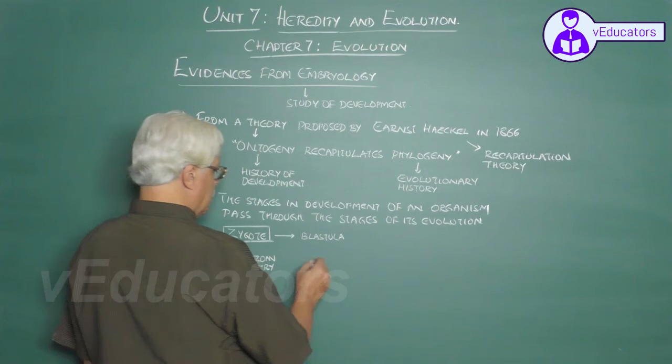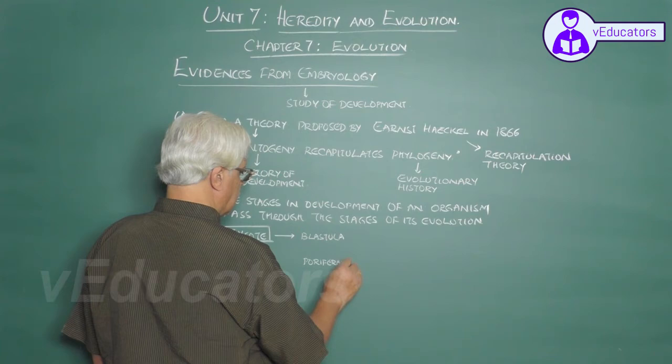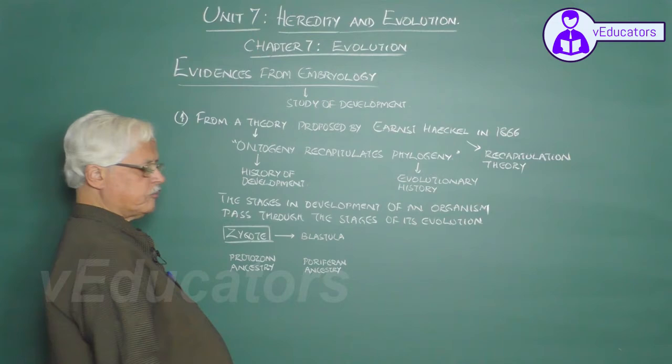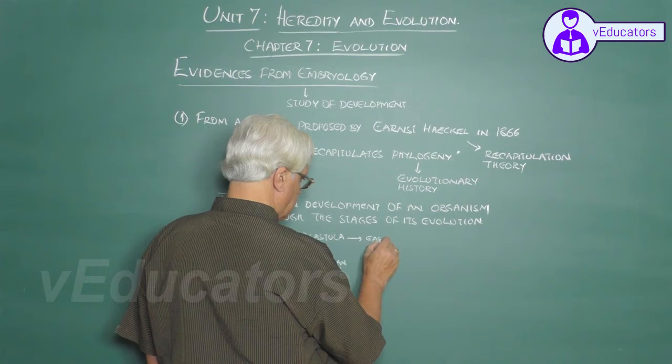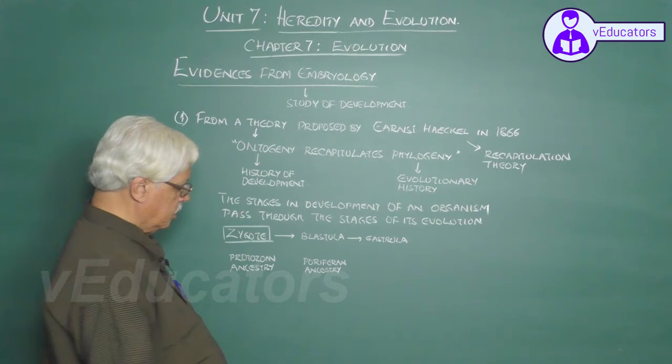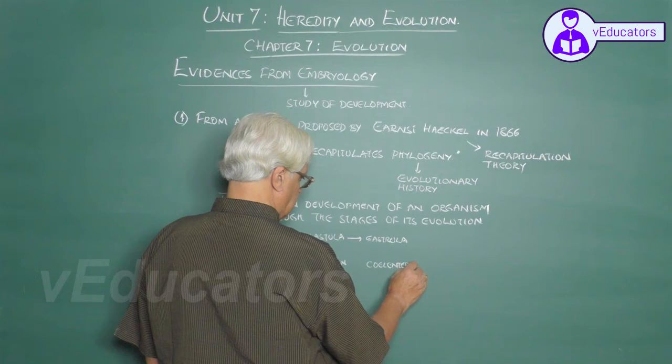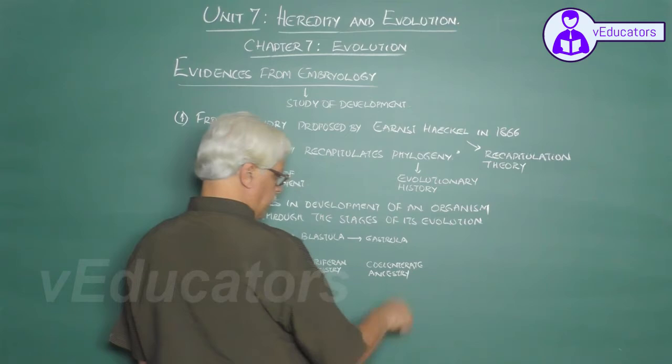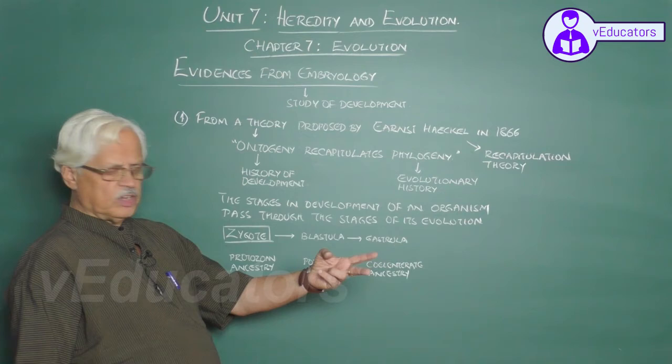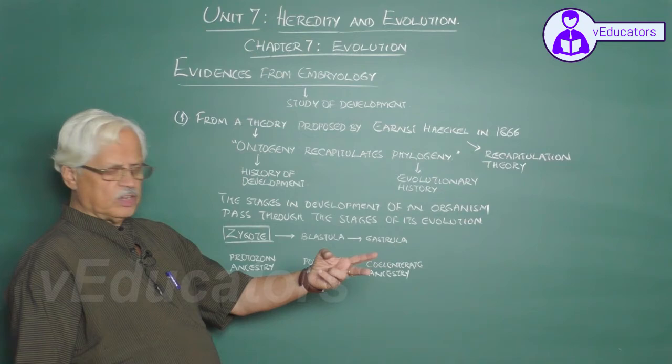The blastula stage, which is just a ball of cells, is supposed to represent a parazoan ancestry. Because initially the gastrula is two-layered, then it becomes three-layered. Once it becomes three-layered, it represents the triploblastic ancestry, and so on.